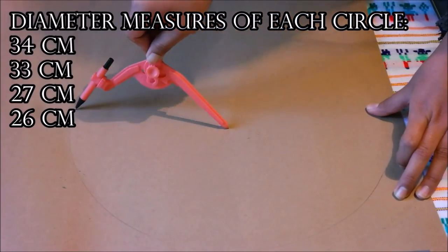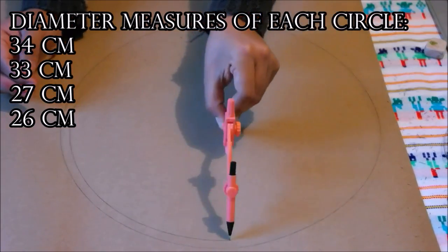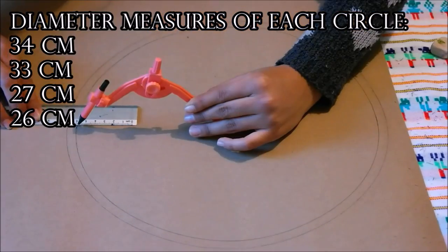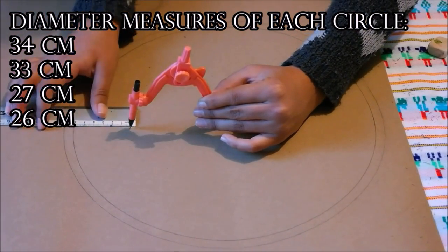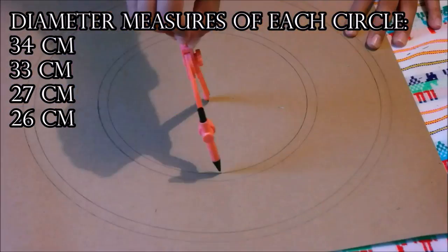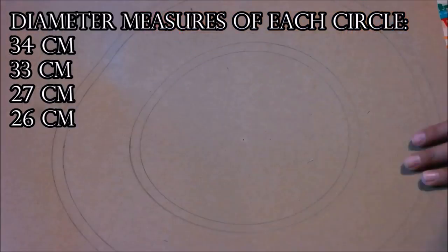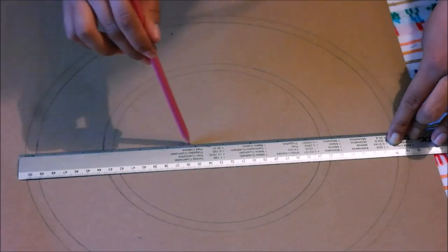Start by drawing a circle of the same size as your clock. Then using the same center point, draw three smaller circles inside. Here you can see the measures of each one. You will have four circles like this.